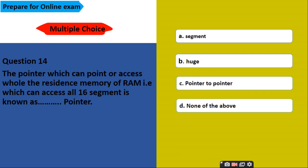The pointer which can point or access the entire memory of RAM, that is, which can access all 16 segments is known as which pointer. See, here is a confusion between far pointer and huge pointer. Sometimes the question is for the far pointer and sometimes for the huge pointer. So you need to read it carefully and depending on the options, please read the answer. Here, options are segment pointer, huge pointer, pointer to pointer, none of these.